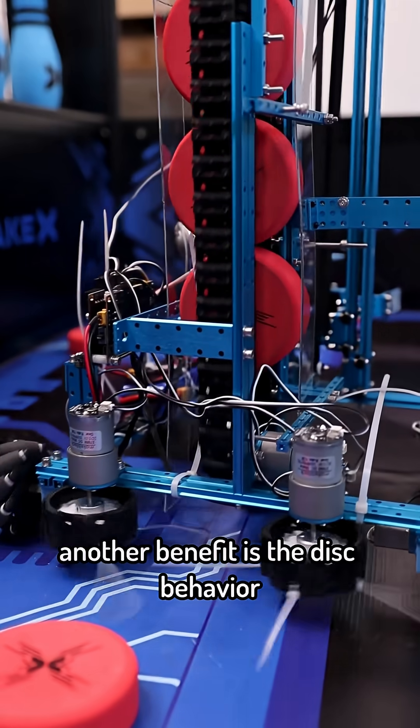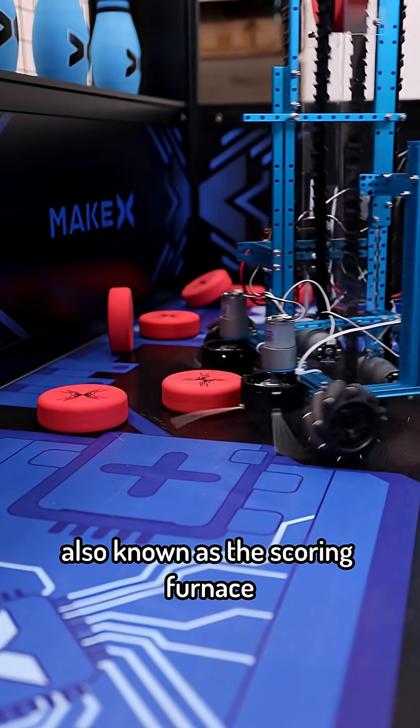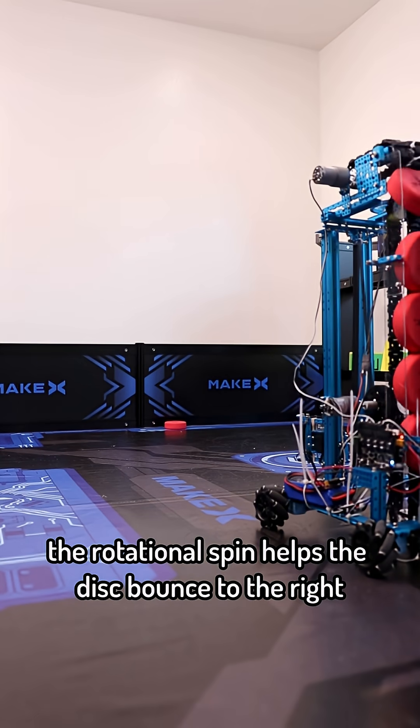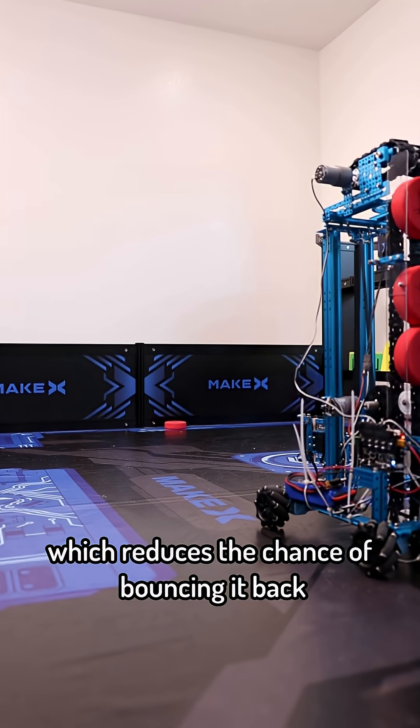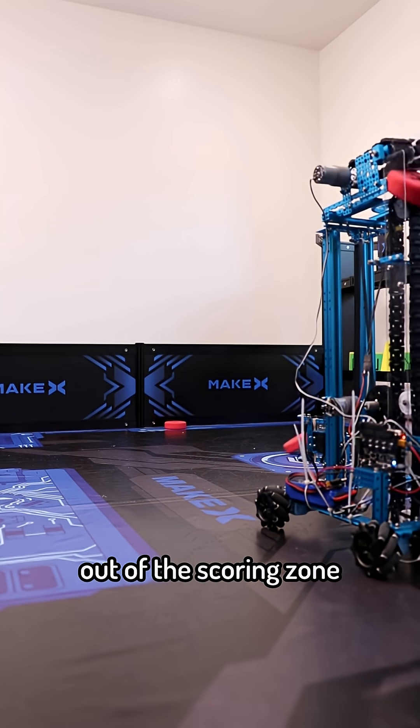Another benefit is the disc behavior upon hitting the backboard, also known as the scoring furnace. The rotational spin helps the disc bounce to the right which reduces the chance of bouncing it back out of the scoring zone.